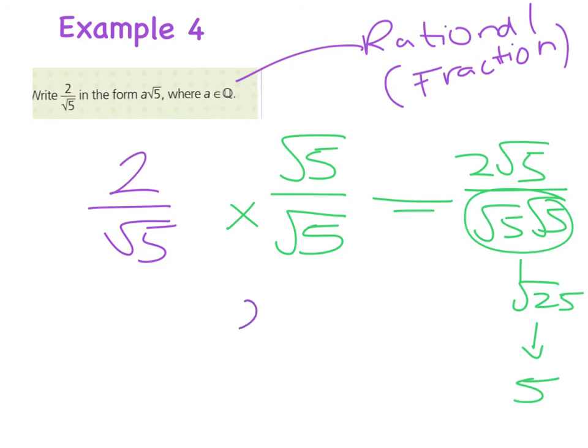So I can really write that as 2√5 all over 5. And another way of rewriting this, meaning the same thing, is 2/5 of √5. And so as a result, I've written it in form of a fraction by a square root.